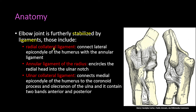The elbow joint is further stabilized by ligaments, which include the radial collateral ligament, the annular ligament, and the ulnar collateral ligament. The radial collateral ligament connects the lateral epicondyle of the humerus with the annular ligament.